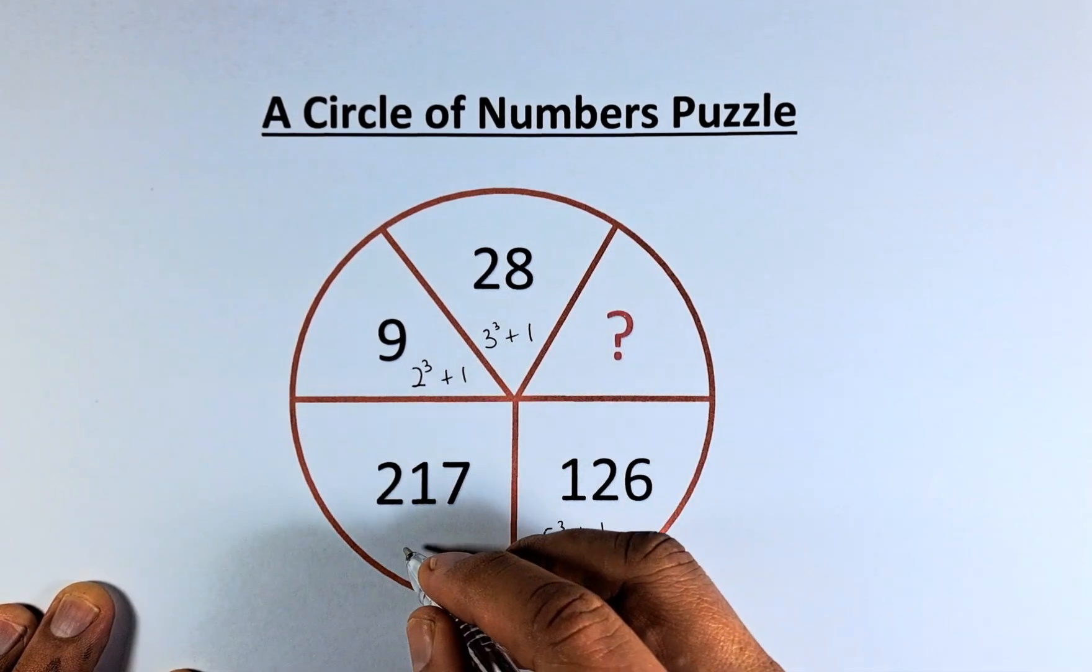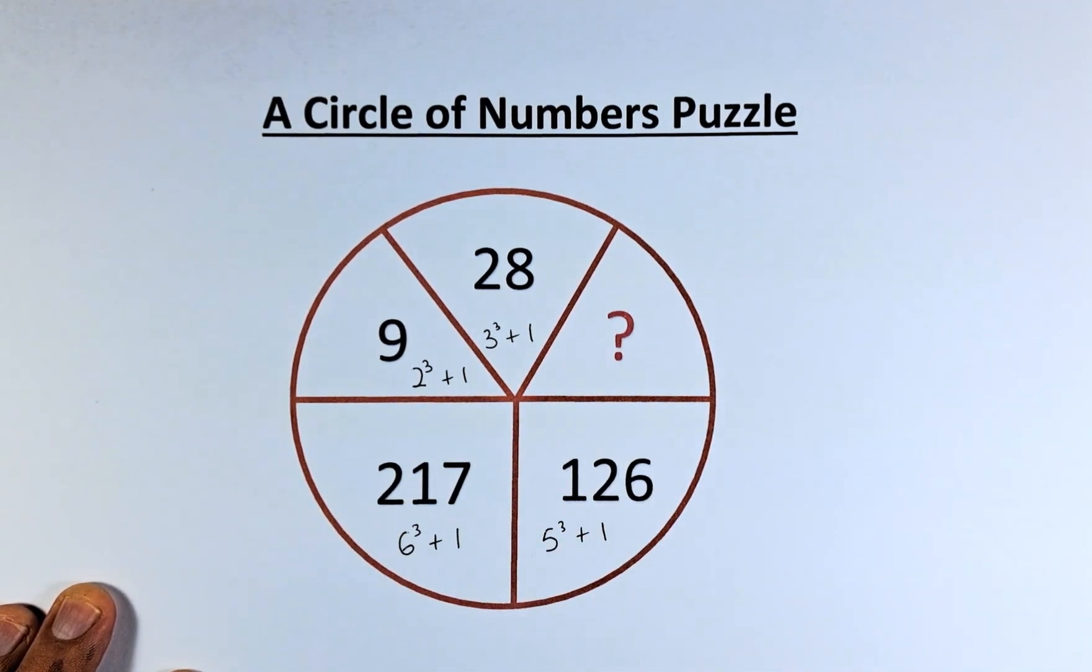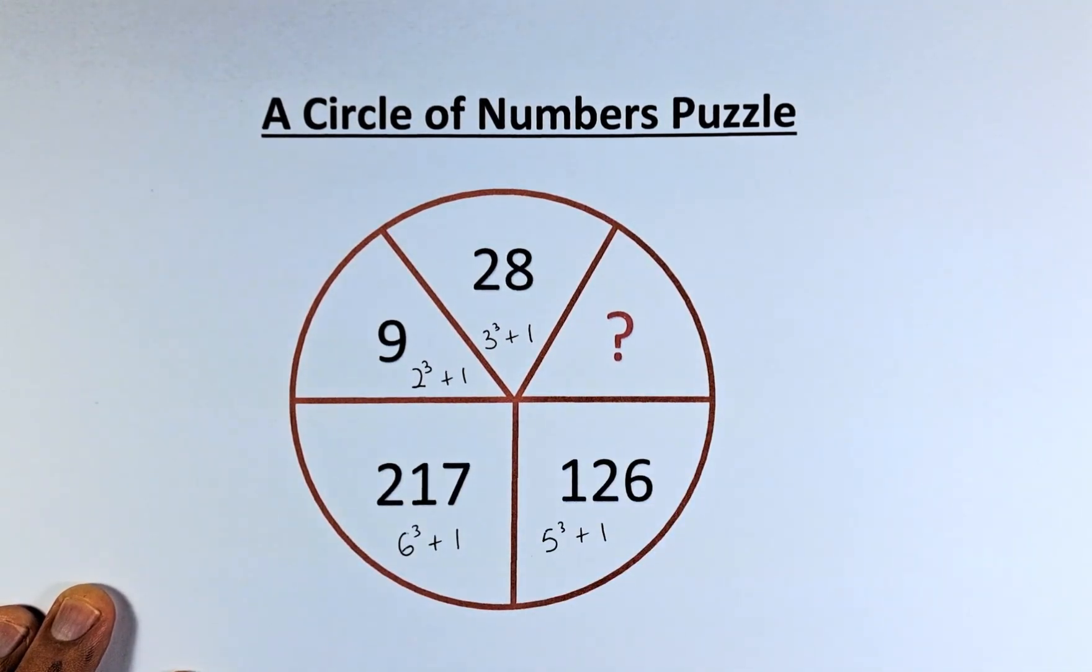217 is actually 6 cubed plus 1. 6 cubed - 6 times 6 times 6 is 216, and then plus 1 is 217. So we're going back to our question mark.